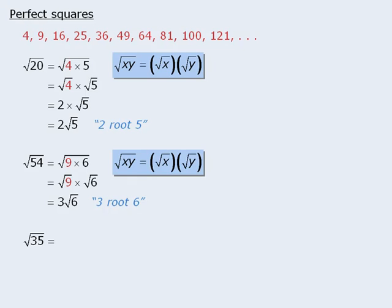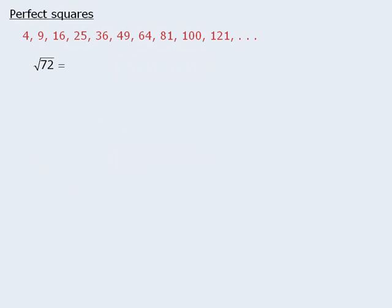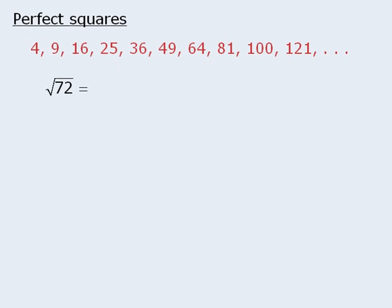What about the square root of 35? Can we take 35 and rewrite it as the product of two numbers, where one of the numbers is a perfect square? The answer is no, so we cannot simplify this root any further. When it comes to simplifying roots, we can save a lot of time by finding the largest perfect square that divides into a number.